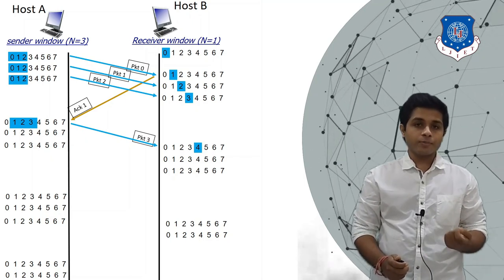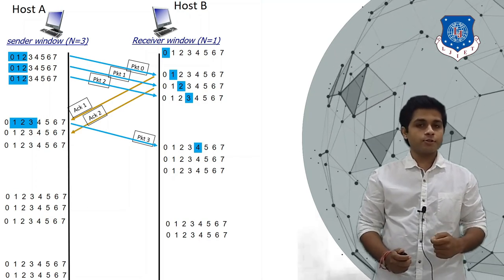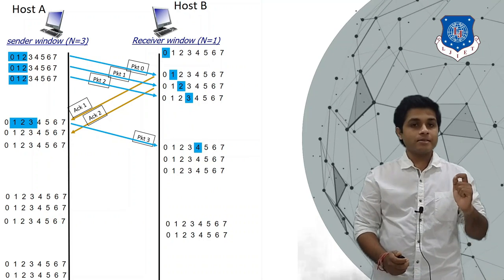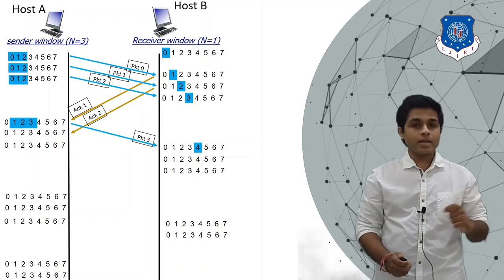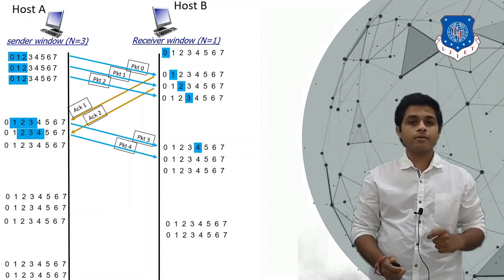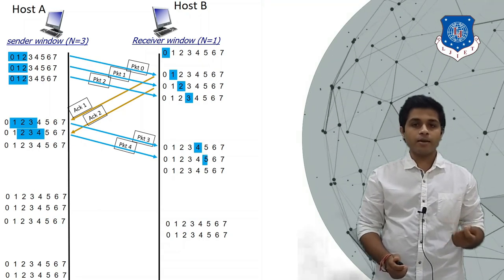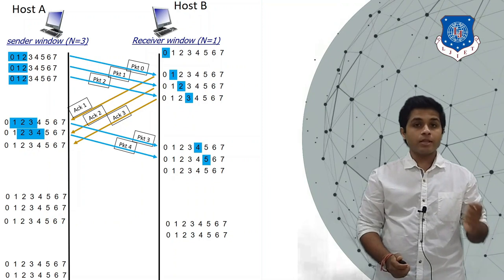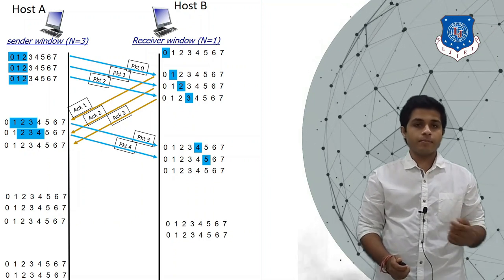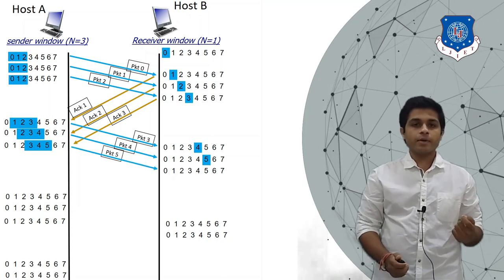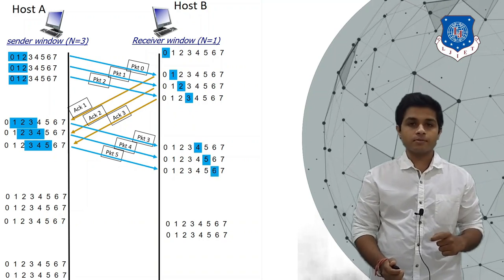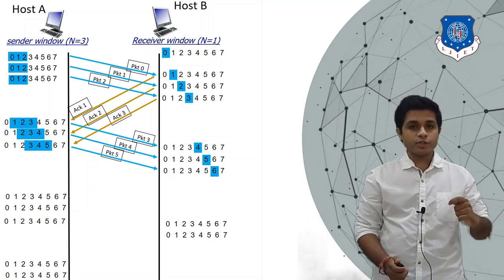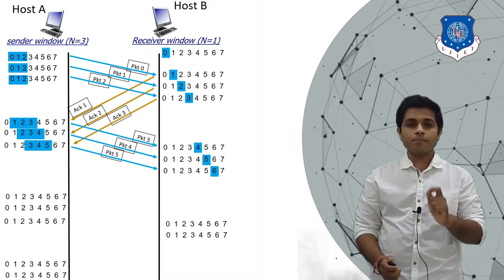B sends acknowledgement two for packet one. When A receives acknowledgement two, it knows packet one was received successfully, the sender's window slides, and A sends packet four. As B receives packet four, the window slides to five. Then A receives acknowledgement three for packet two, sends packet five, and the receiver's window slides to six. The sender's window is now at three, four, and five — those three packets are in transmission — and B is expecting packet six.